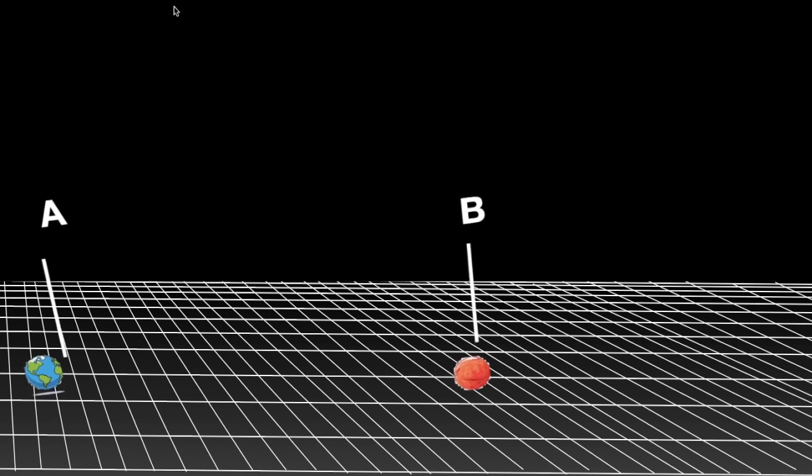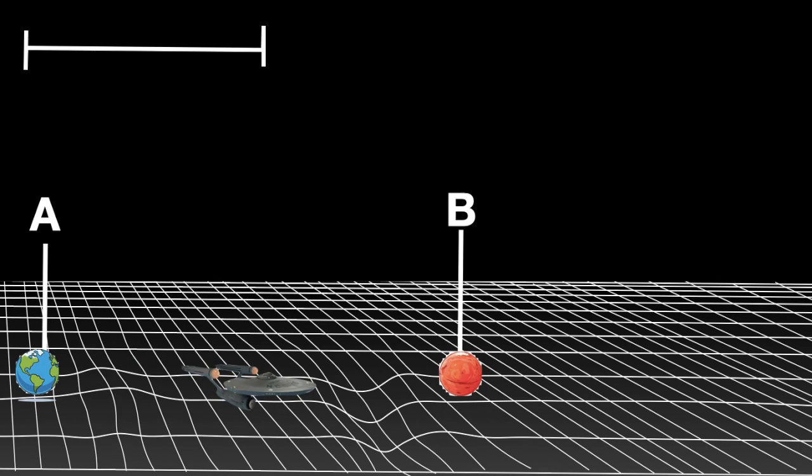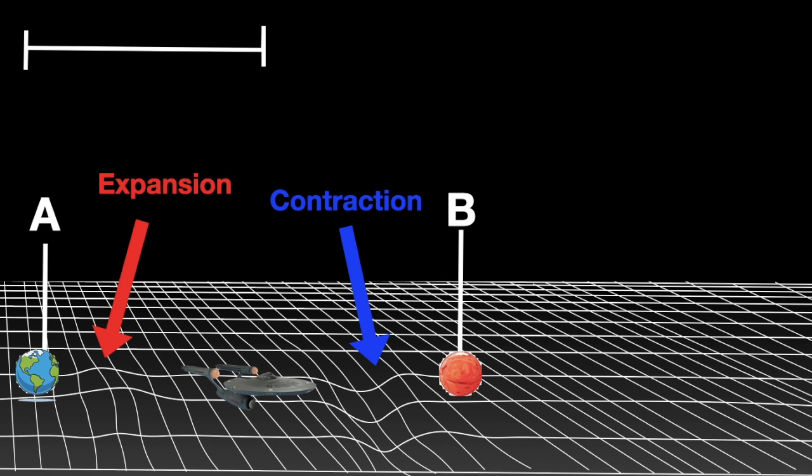Let's label dislocation point A and dislocation point B. Our warp drive basically expands the distance from itself to its starting point and contracts the distance from itself to the destination. Essentially, this gives the illusion that it traveled from point A to point B at superluminal speeds.